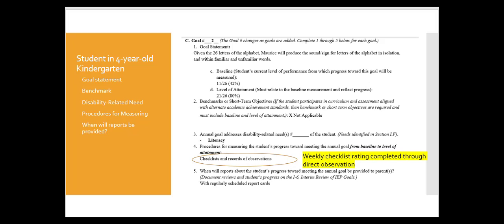Now we really want to be clear about the conditions under which this will occur, how the data will be collected, how often it will be collected. So a way to improve that could be to say weekly checklist rating completed through direct observation.